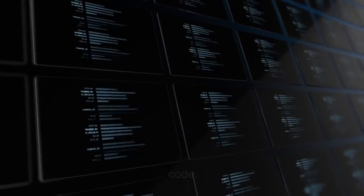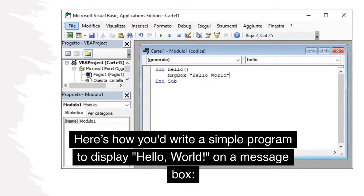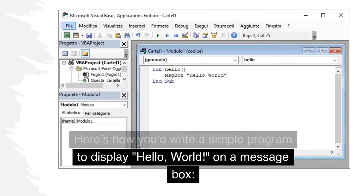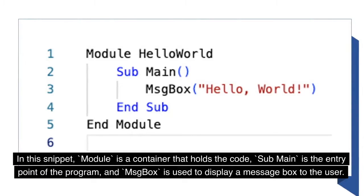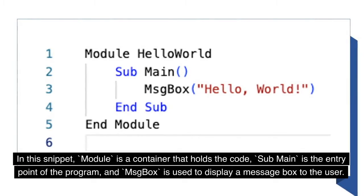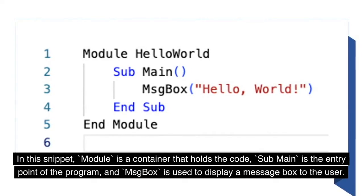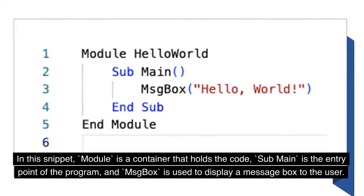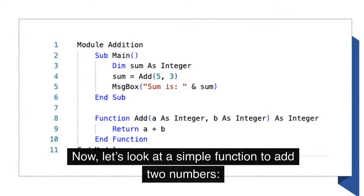Let's explore some basic Visual Basic code. Here's how you'd write a simple program to display Hello World on a message box. In this snippet, a module is a container that holds the code, Sub Main is the entry point of the program, and MsgBox is used to display a message box to the user.